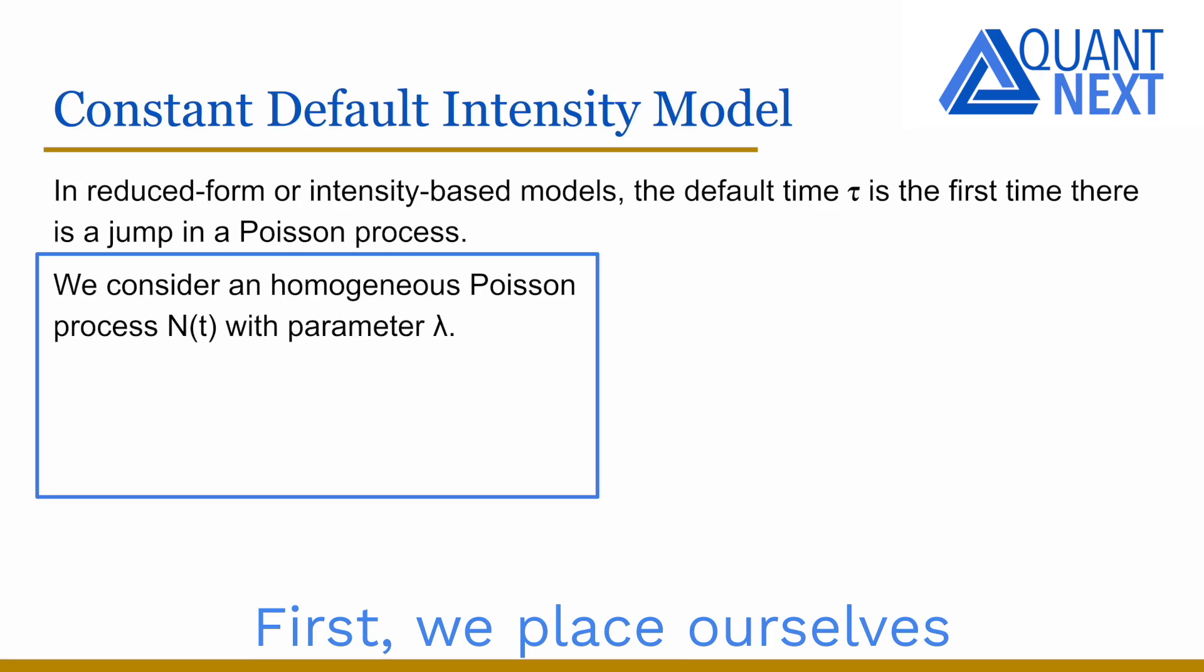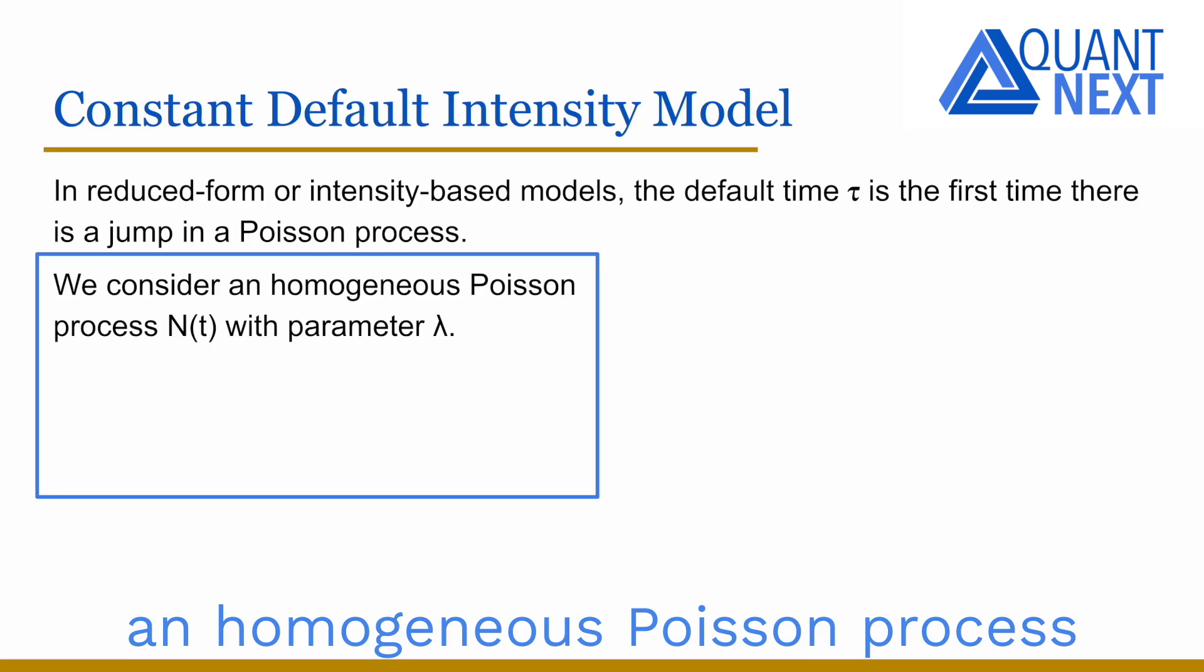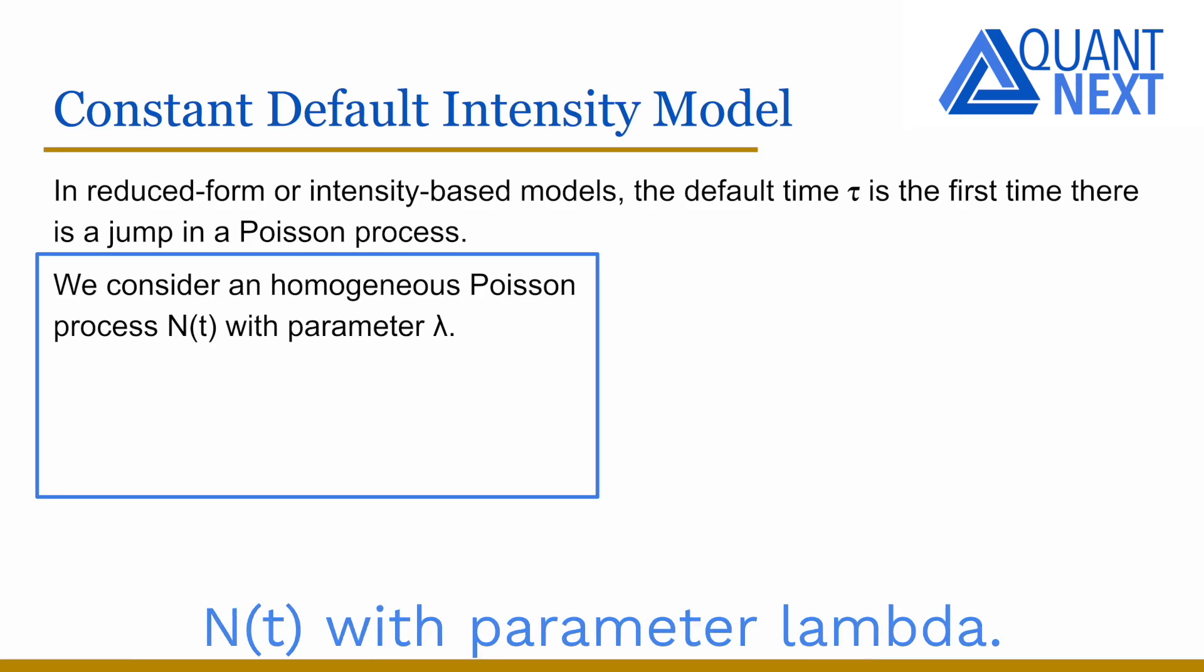First, we place ourselves in a constant intensity model and we consider a homogeneous Poisson process N(t) with parameter lambda.